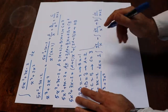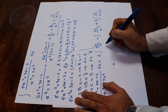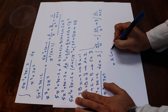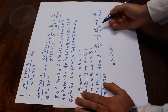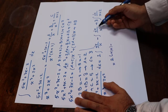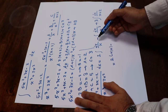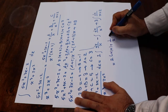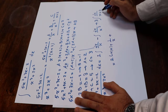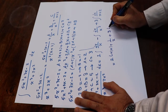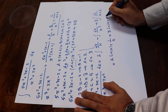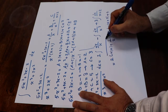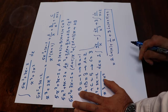Evaluating each term: the integral of dx/x is ln|x|, the integral of dx/x² is -1/x, and the integral of dx/(x + 2) is ln|x + 2|. So the final answer is 2·ln|x| + 1/x + 3·ln|x + 2| + C, where C is the constant of integration.